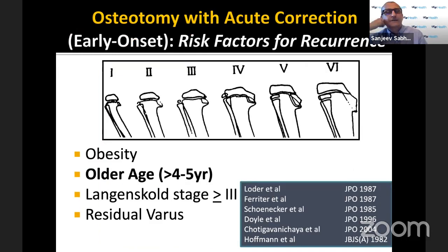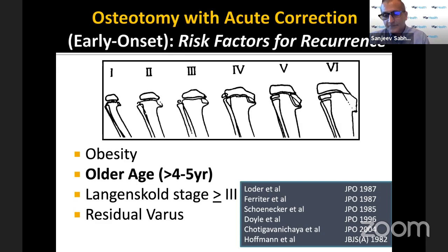Risk factors for recurrence after osteotomy include the Lamont classification findings — an obese child with later osteotomy at advanced Langenskiöld stages who is not fully corrected will have a higher chance of recurrence.